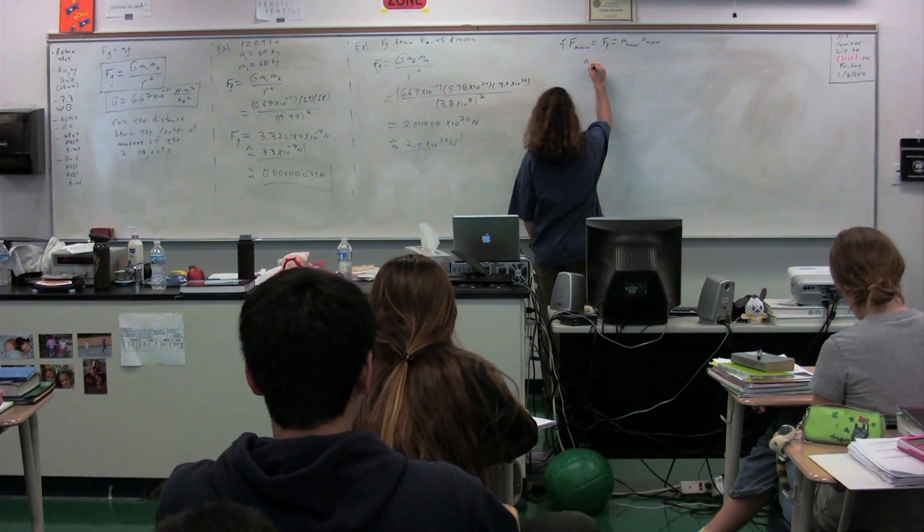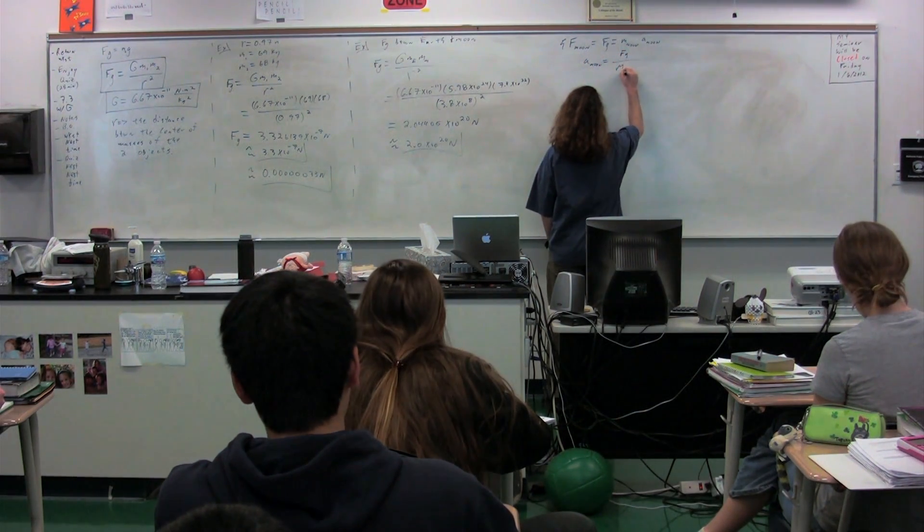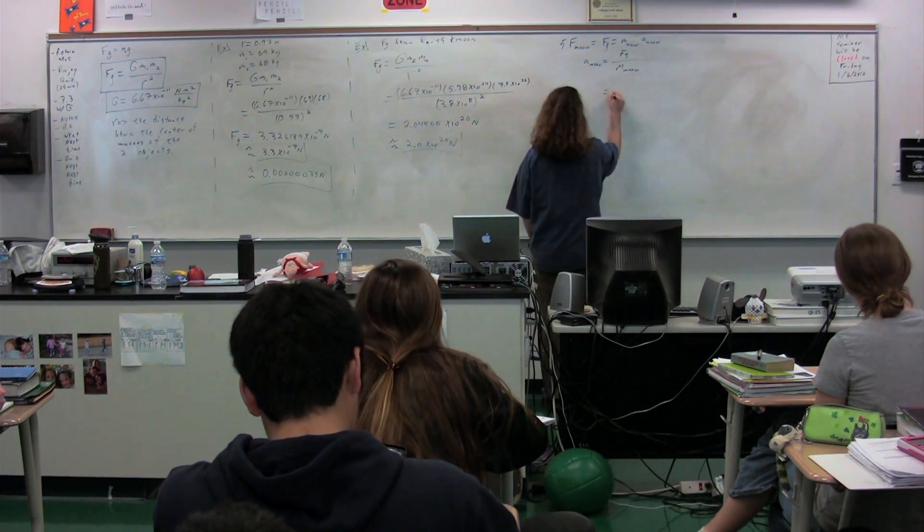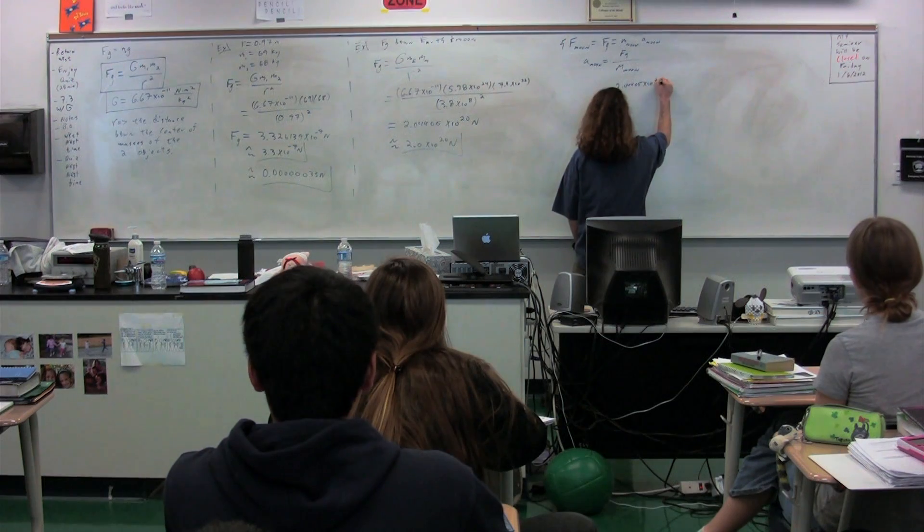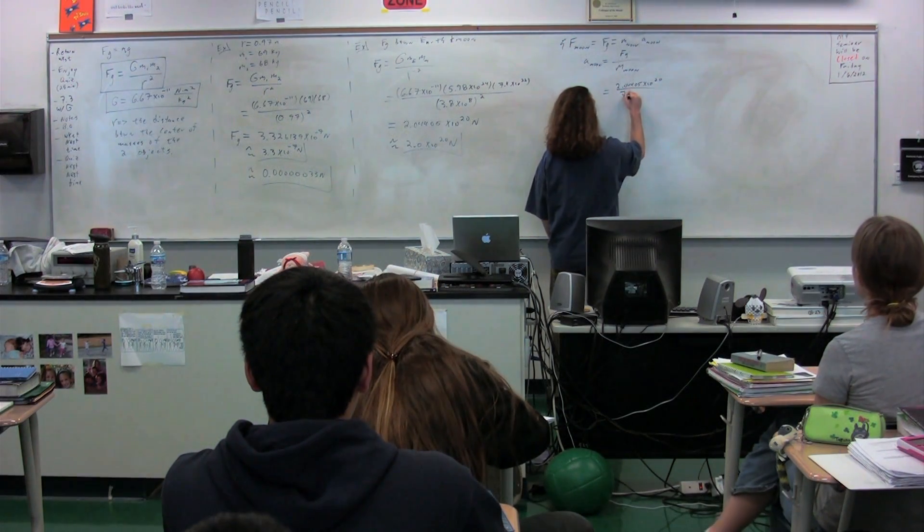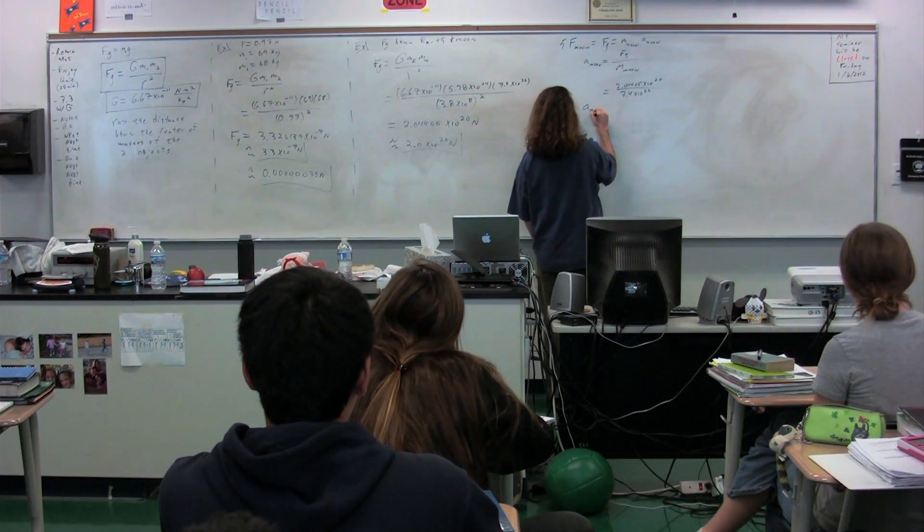So actually, we'll figure out the acceleration of the Moon. So the acceleration of the Moon is going to be equal to the force of gravity divided by the mass of the Moon. So the force of gravity is 2.04405 times 10 to the 20th divided by the mass of the Moon, which is 7.4 times 10 to the 22nd.